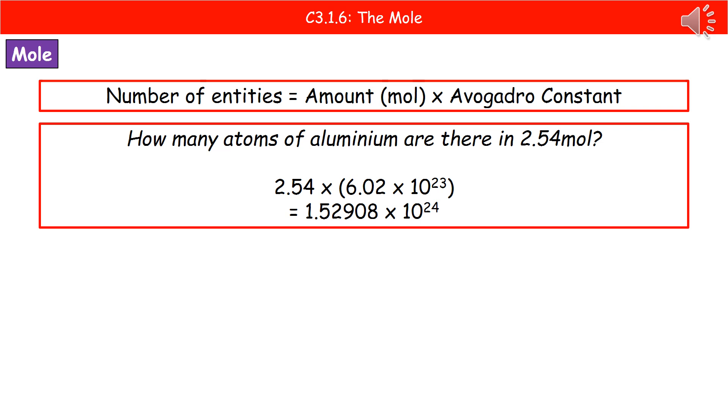So we're going to take the 2.54 which is our amount, we multiply that by the Avogadro constant which is 6.02 times 10 to the power 23. Plug that into your calculator and then you will get the answer 1.52908 times 10 to the power 24.